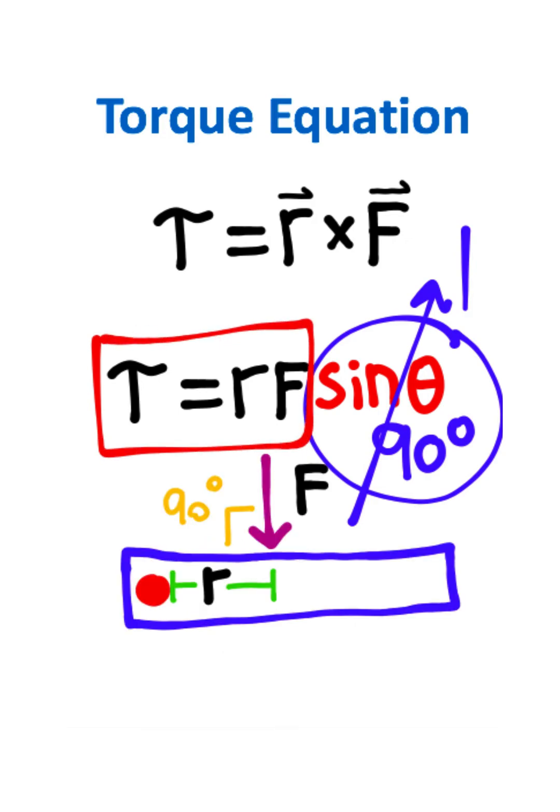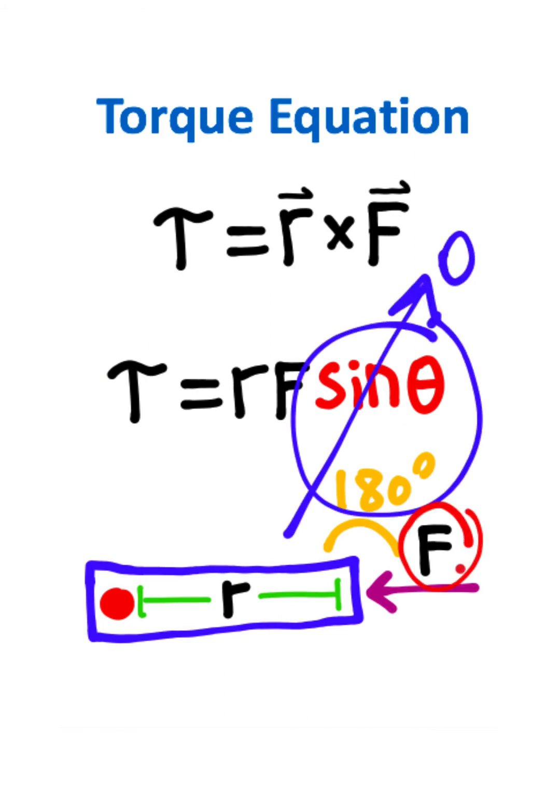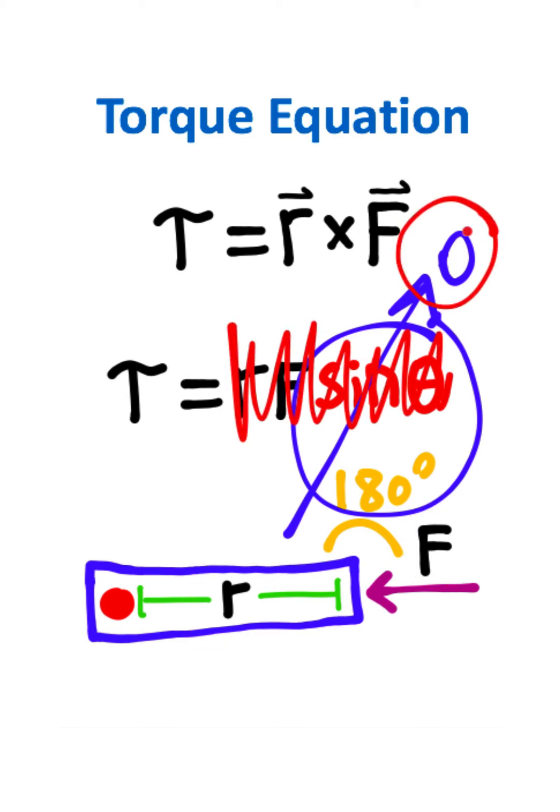But now let's say instead of applying a perpendicular force, you apply an anti-parallel force. The sine of 180 is equal to zero. Meaning whenever the force is parallel or anti-parallel to the displacement, the entire torque is going to be equal to zero.